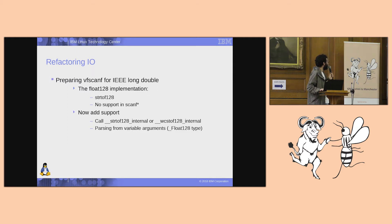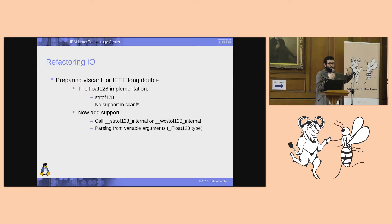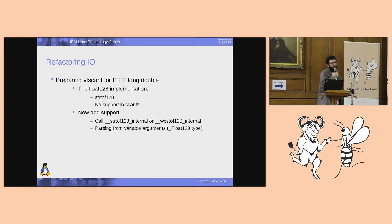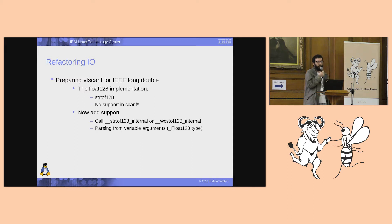For scanf, things are the other way around. scanf calls strtof or strtol, so it's kind of easier for this transition because we already have strtof128. In scanf, we only have to prepare the call to the other function — if the code is compiled with IBM long double then it calls strtol, and if compiled for IEEE long double it calls strtof128. It also has the same problem as strfrom in having to parse the variable arguments.